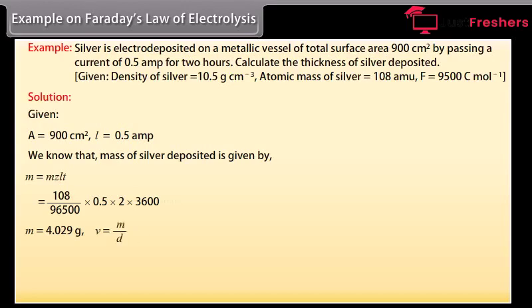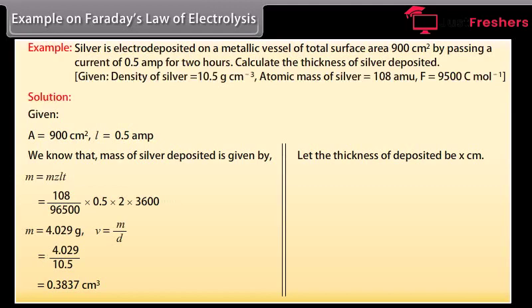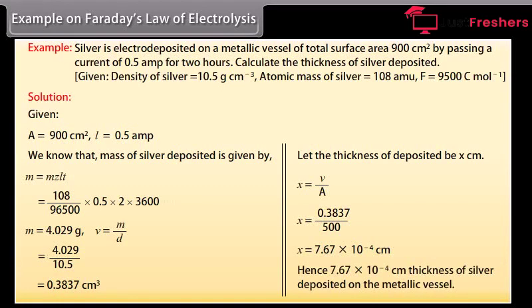Let the thickness of deposited be x cm. We know that x is equal to V upon A. By putting the values we get x is equal to 7.67 into 10 raised to the power minus 4 cm. Hence 7.67 into 10 raised to the power minus 4 cm thickness of silver is deposited on the metallic vessel.